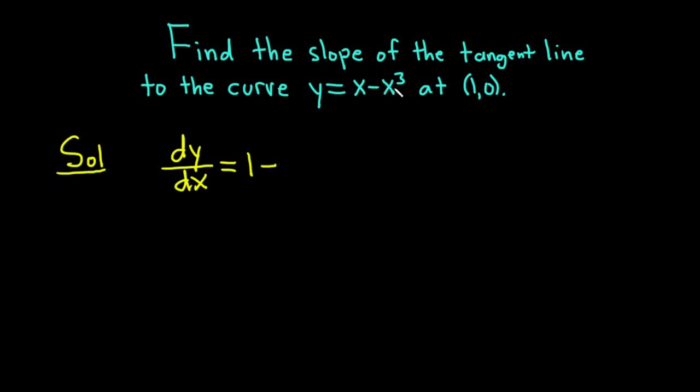And then to find the derivative of x cubed, we use the power rule, which says that we bring the 3 down and put it in the front. And then you subtract 1 from the exponent. 3 minus 1 is 2, so we're left with x squared.